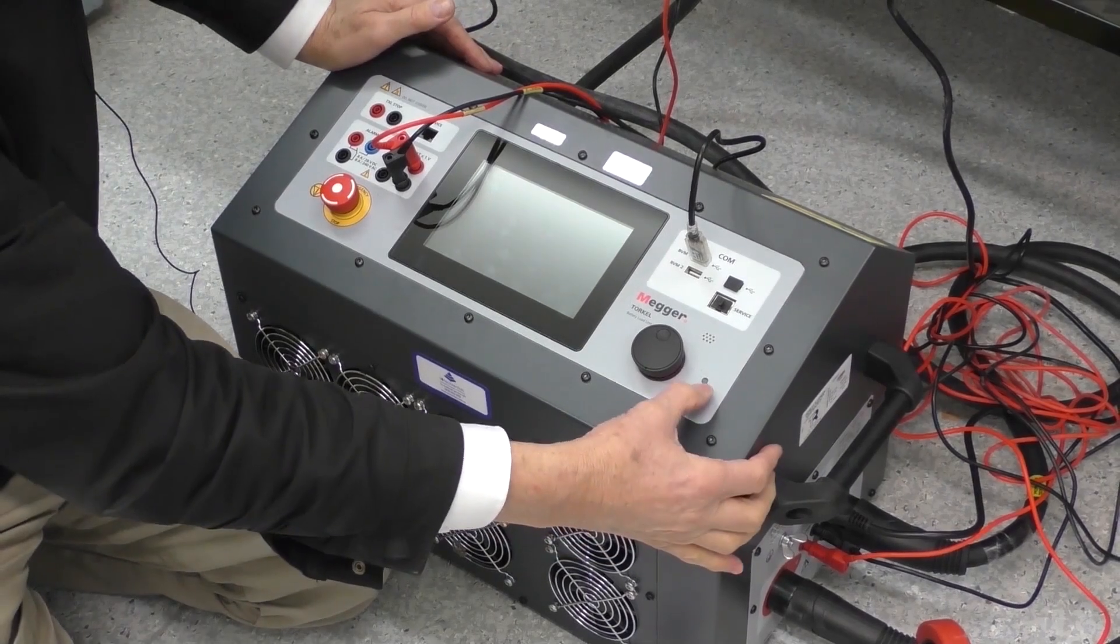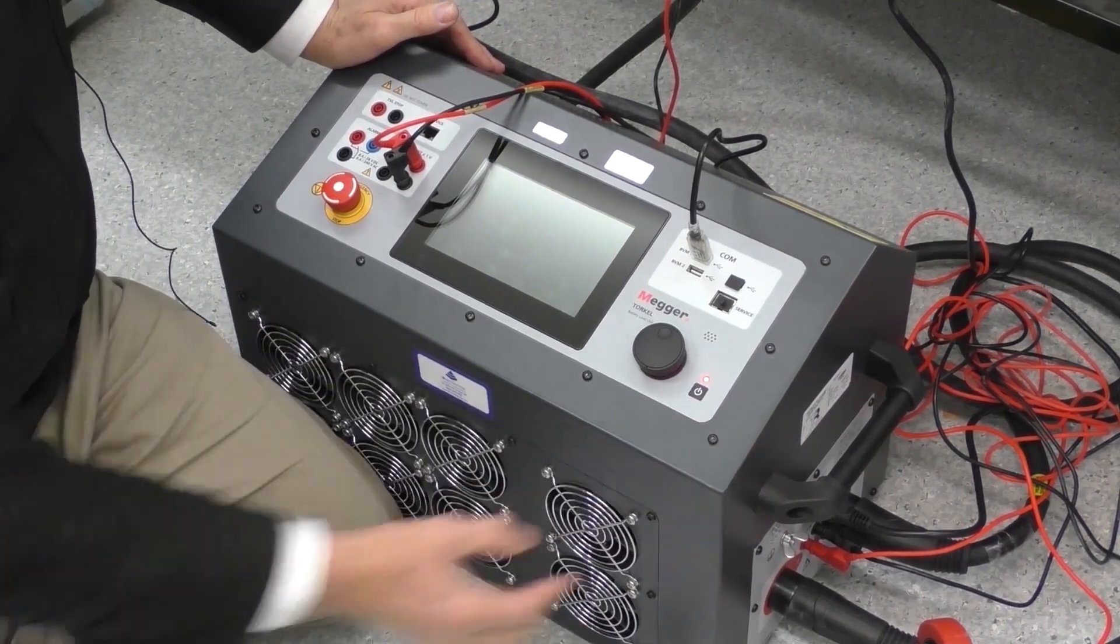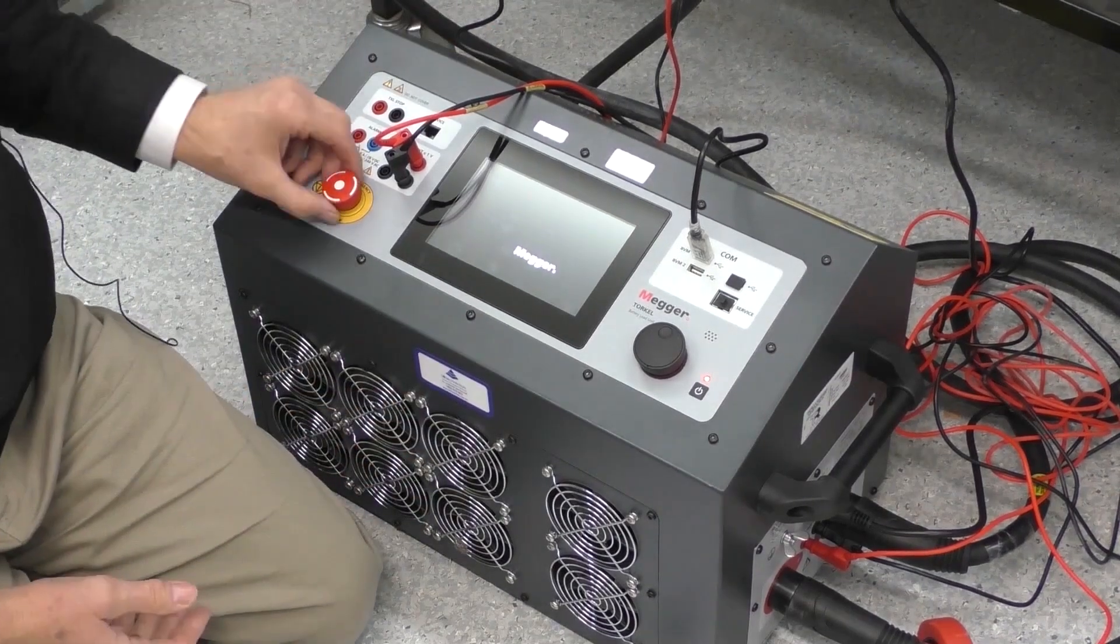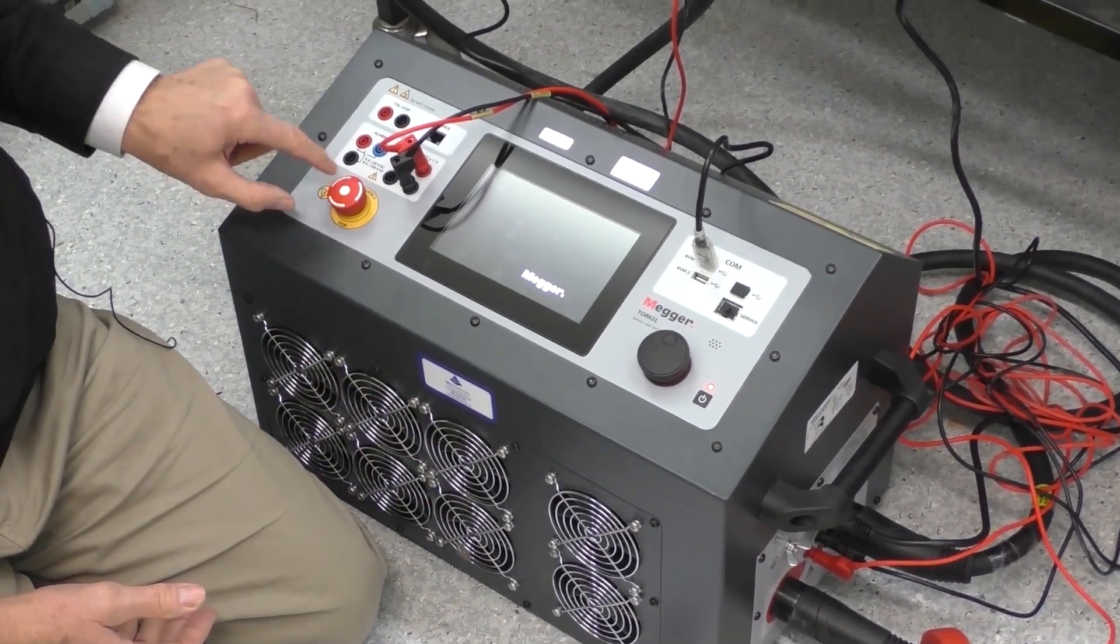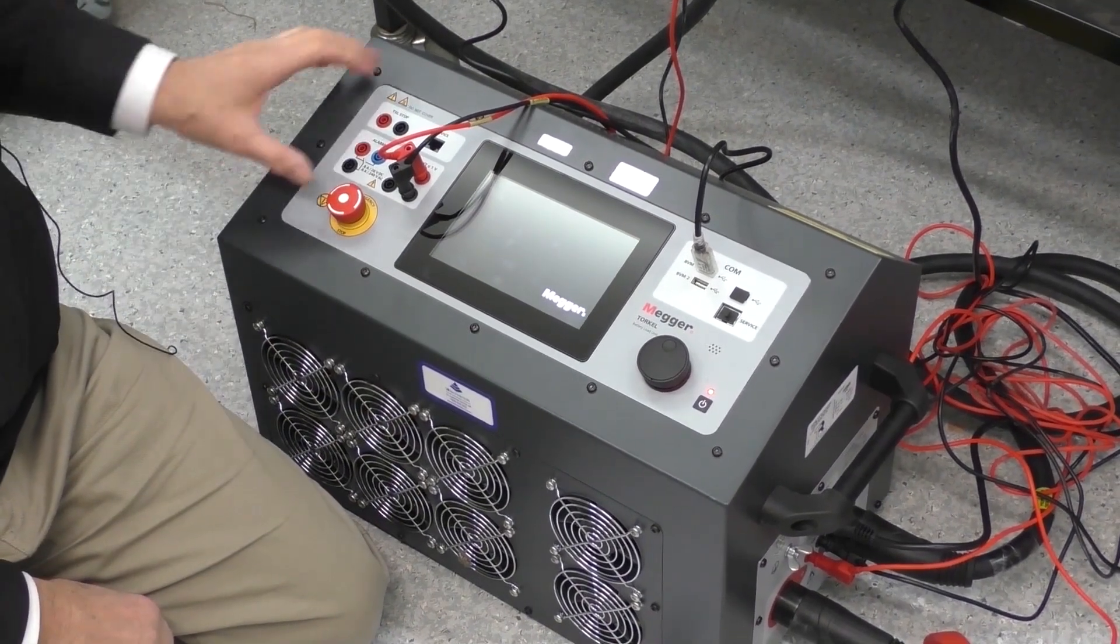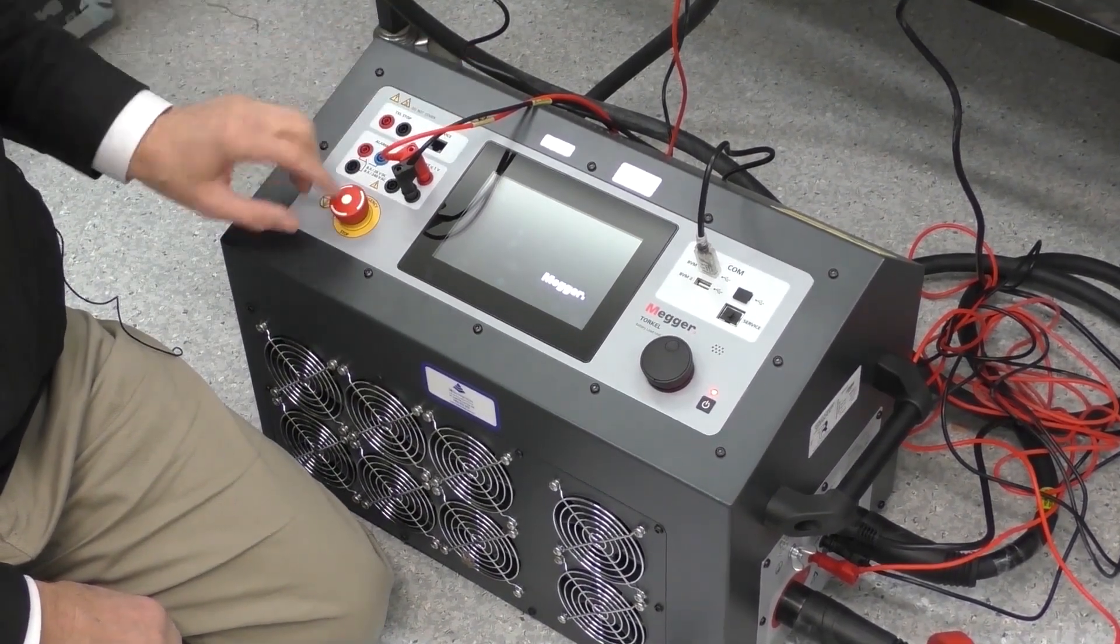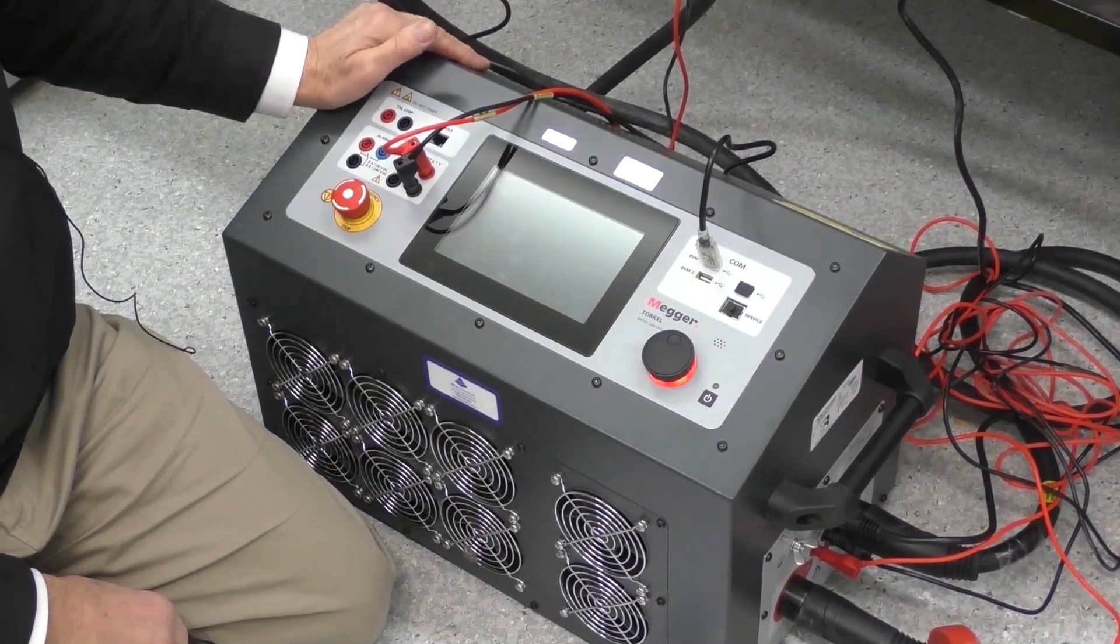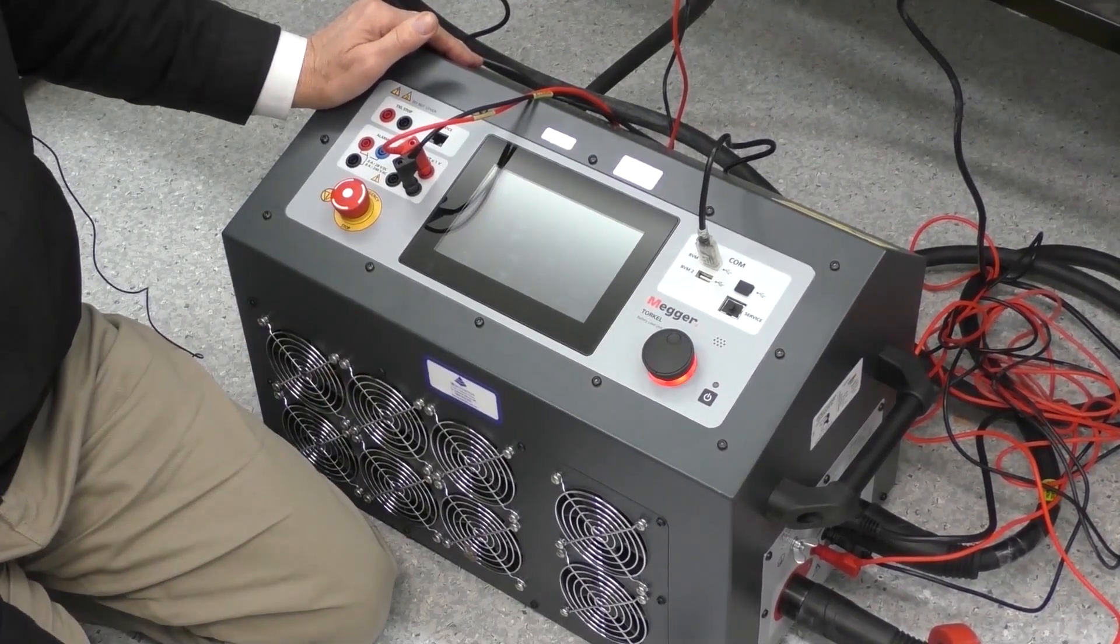Now turning the Torkel on, we just switch the on button, the fans kick up. So it becomes quite loud. Now, if the emergency stop is pushed in, you can't start. So in other words, you've got to make sure this button is out and to get it out, you've got to do a half twist. Now the unit's still booting.